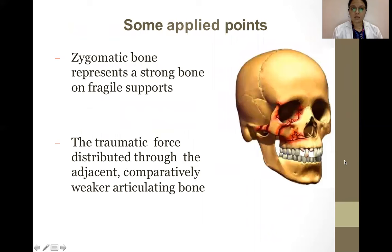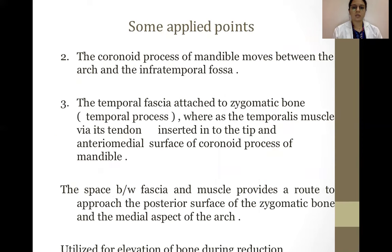Some applied points: the zygomatic bone represents a strong bone on fragile support, with traumatic force distributed through adjacent comparatively weaker articulating bone. The coronoid process of the mandible moves between the arch and the infratemporal fossa. The temporal fascia attaches to the zygomatic bone, whereas the temporalis muscle is inserted by its tendon into the tip and anteromedial surface of the coronoid process of the mandible. The space between the fascia and the muscle provides a route to approach the posterior surface of the zygomatic bone and the medial aspect of the arch.